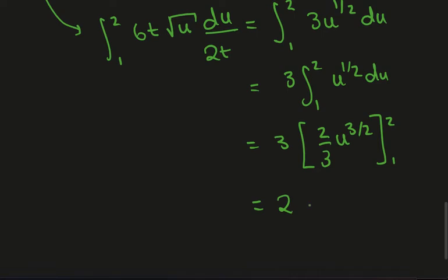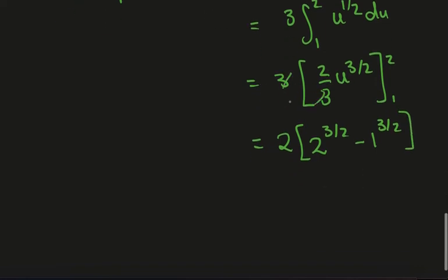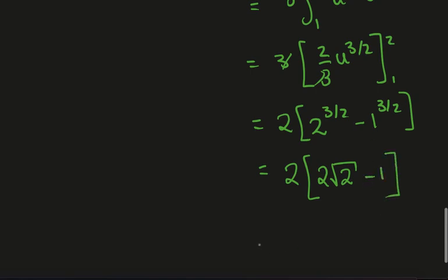And this just becomes 2 times 2^(3/2) minus 1^(3/2). Here the 3's cancel and I can take the 2 out. So what I have is, well, 2^(3/2) is the square root of 8, which I can write as 2 times the square root of 2, minus 1. And so if I expand this out, I get 4√2 minus 2. And that's it.